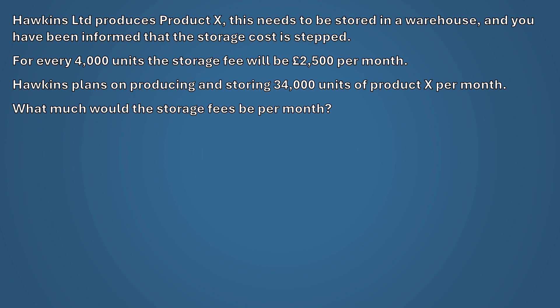We know for every 4,000 units the cost will increase. If Hawkins Limited plans to store 34,000 units a month, we first need to calculate how many steps that would be. To do this we take the activity level of 34,000 units and divide by the units per step, which in this example is 4,000. This gives us 8.5 steps.